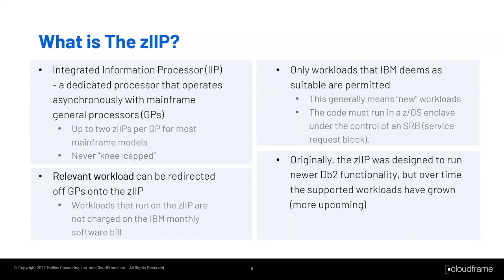There are limits to ZIP usage. Originally you could have no more than one ZIP per general-purpose processor, but today most models allow two ZIPs per GP. IBM's licensing agreement puts strict restrictions on the kind of code eligible to run on a ZIP. The code has to run in a ZOS enclave under the control of an SRB, or service request block.